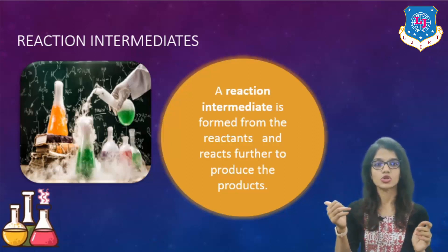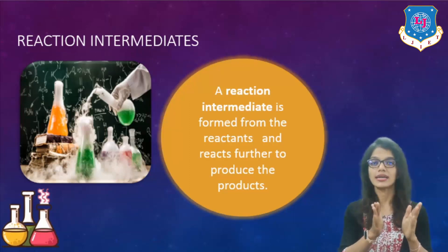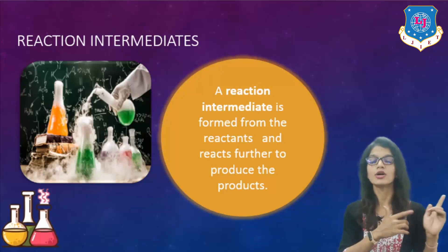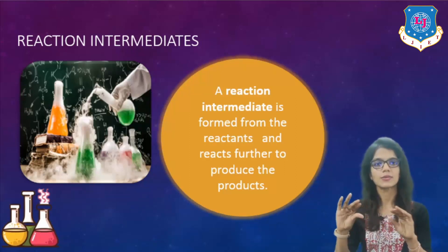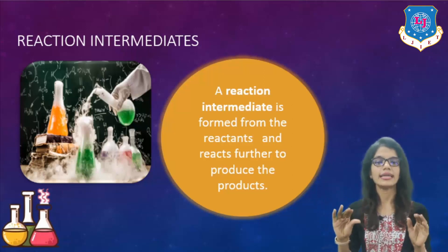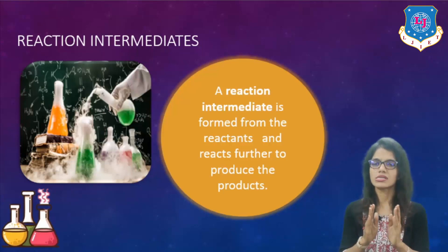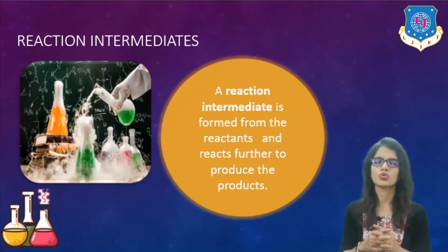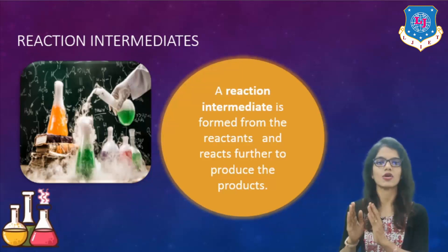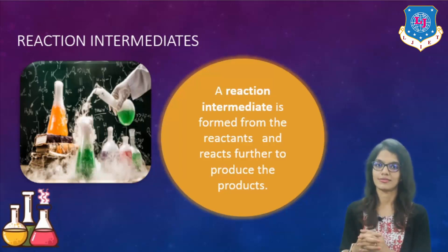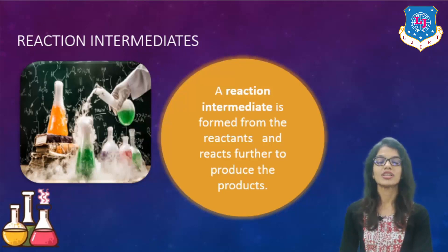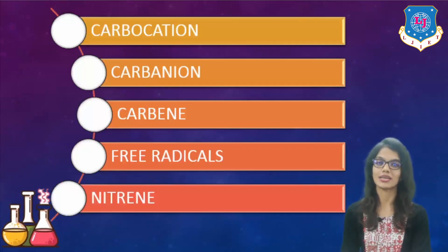Reactants combine together to form intermediates. Intermediates combine together to form the products. In this particular manner, any kind of organic reaction proceeds. The middle stage — the intermediate one — this complex or state is known as the intermediary state of an organic reaction. Now let's move on to the next topic: which are the types of reaction intermediates?